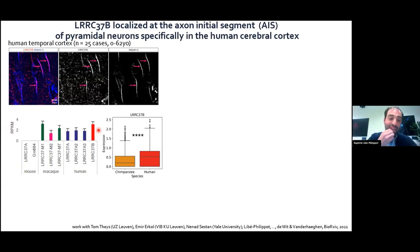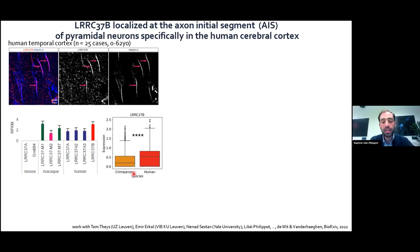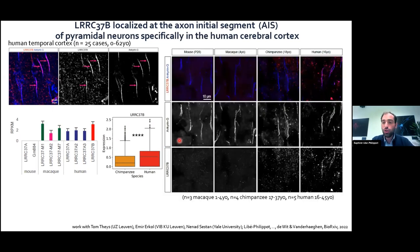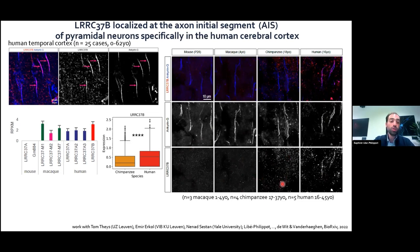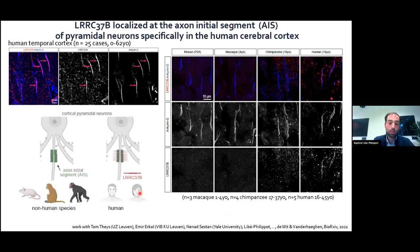Looking across species: at the transcript level, mouse doesn't express any LRC37 gene, while macaque and human express all their encoding paralogues. Interestingly, LRC37B expression is increased in humans compared to chimpanzee. At the protein level, I performed similar stainings in human, chimpanzee, macaque, and mouse. In all species I can detect the AIS marker AnkG, but I can detect LRC37B only in humans — not in the three other species. So LRC37B is a human-specific receptor at the axon initial segment of cortical pyramidal neurons.